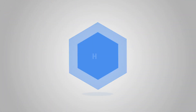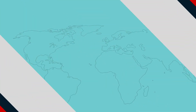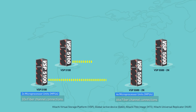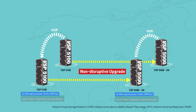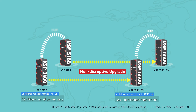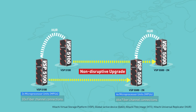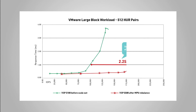Next, let's take a brief look at similar evaluations with Hitachi Universal Replicator or HUR, and Hitachi Thin Image or HTI. To evaluate HUR, we upgraded two VSP5100 units in a two-data-center HUR configuration to VSP5500 two-node models. The number of pairs in pair-state was 512 using four journal groups, and the active workload during the procedure was a steady 110,000 IOPS. After we completed the scale-out and MPU rebalance, we observed throughput improvements of 100% in the VMware large block workload.